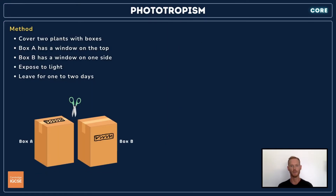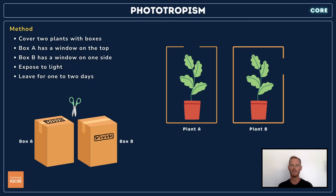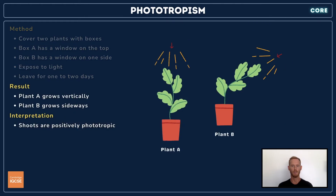To investigate phototropism, cut a window in the top of one cardboard box and in the side of another. Water two potted seedlings and cover each with a box. Expose both boxes to a single light source and leave for one to two days. The stem of the plant in box A grows vertically, while the stem of the plant in box B grows sideways. This suggests that young shoots grow towards light, or in other words, are positively phototropic.